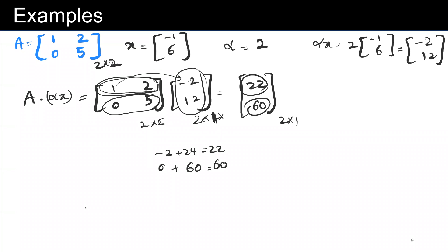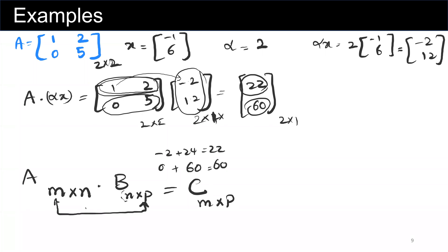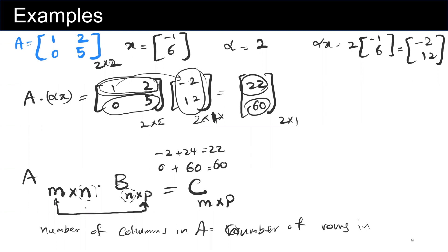A general rule — not just for matrix-vector multiplication but also for matrix-matrix multiplication: if you have matrix A, m by n, and you multiply by matrix B, n by p, the result is going to be m by p — the outer dimensions. We must ensure the inner dimensions are equal, meaning the number of columns in matrix A must equal the number of rows in matrix B.